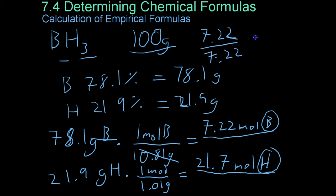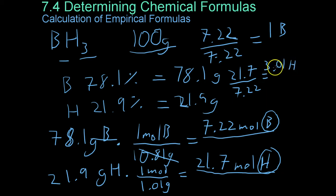So you take 7.22 and divide it by 7.22 to get one boron. And you do the same thing with hydrogen. 21.7 divided by 7.22 works out to be 3.01 moles of hydrogen. Now you can see this is pretty close to 3, so we can assume somewhere in rounding, we made it so that this would come out just short or just above the answer, which is the correct answer of a 3 to 1 ratio of hydrogen to boron.